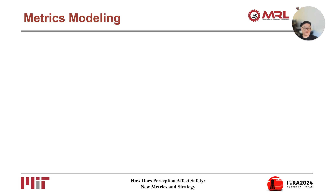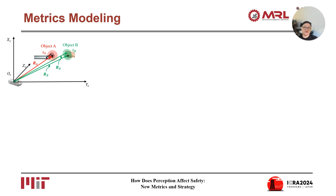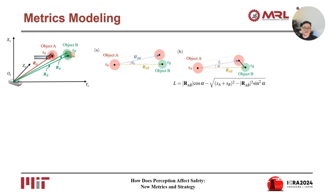Next, we introduce our modeling methodology of robot safety with conventional metrics and the two novel metrics we proposed. The problem is modeled in the camera coordinate. Object A and object B represent the robot end effector and the human hand, respectively. This figure illustrates the marginal condition that object A and object B touch and collide tangentially. Relative velocity and relative position between object A and B are denoted as UAB and RAB. The angle between UAB and RAB is alpha C. Figure B represents the case with a general collision where alpha is smaller than alpha C. The maximum allowable traveling distance before the collision is denoted as L and can be calculated with this formula.